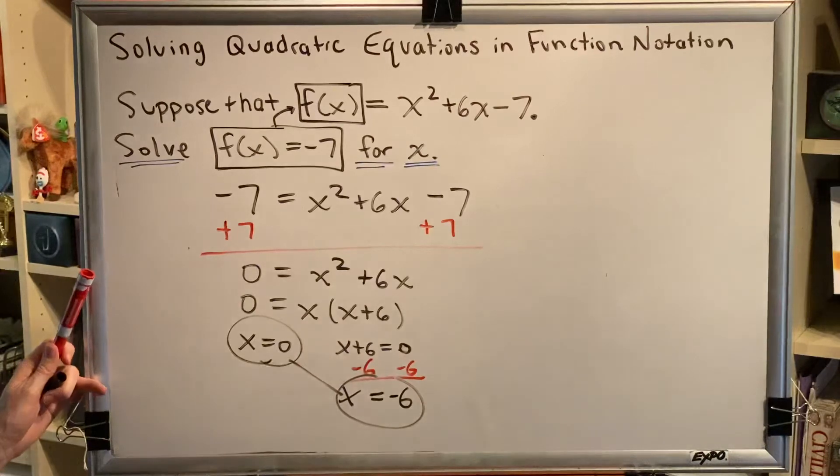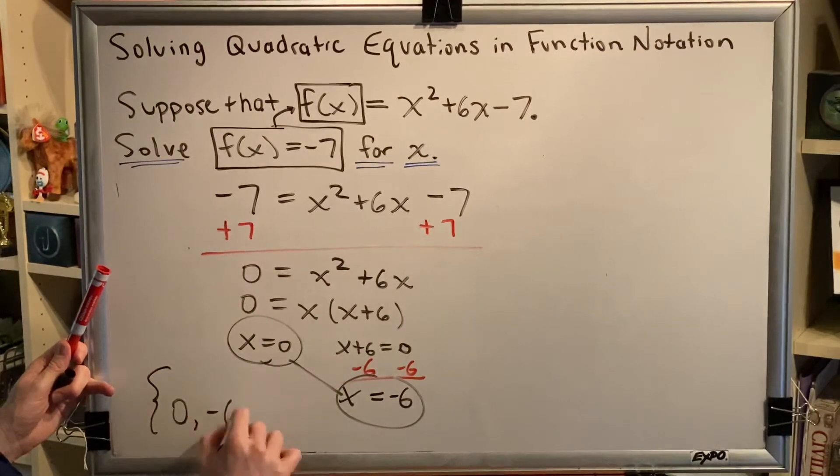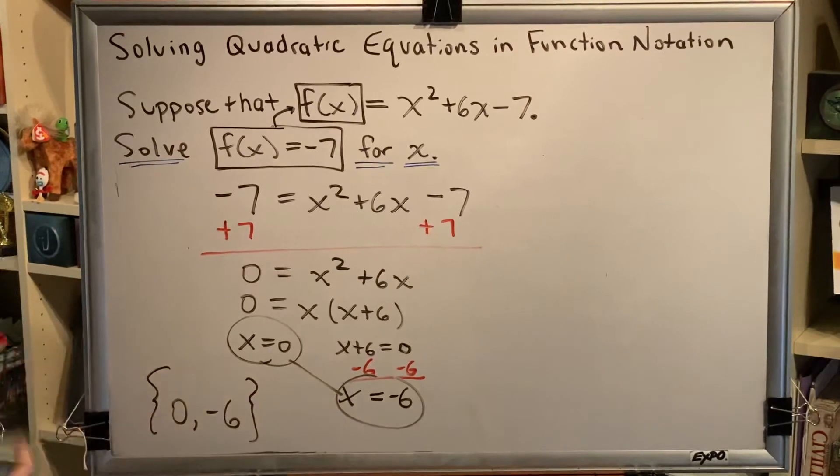Putting these together gives us our final solution to this problem, 0, negative 6. Notice the use of braces here.